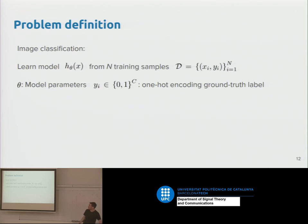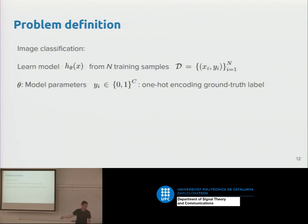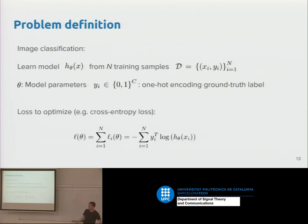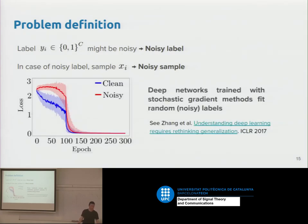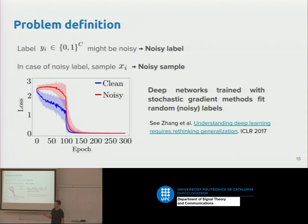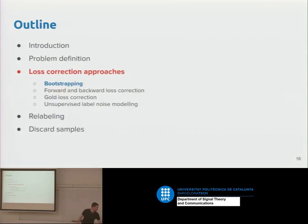The standard image classification problem involves learning some model H parameterized by theta, taking in some image X and training on paired examples, typically optimizing cross-entropy. In the label noise case, the difference is that our labels may be incorrect — if a sample has an incorrect label we call that a noisy label, and the corresponding (X, Y) pair a noisy sample. What happens if you try to train with standard cross-entropy on noisy labels? You'll fit the noise, basically fitting the noisy labels, which usually happens after you reduce the learning rate. Keeping the learning rate high prevents fitting the noise for a while but won't let you learn the real data well either.